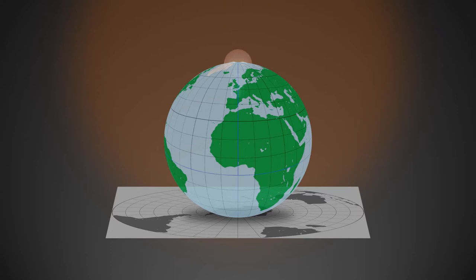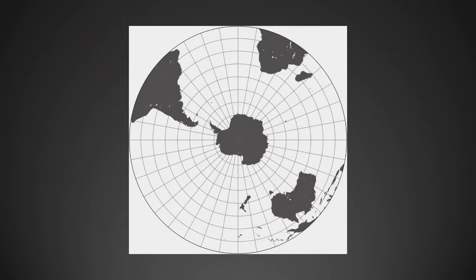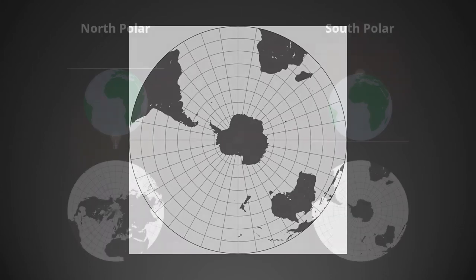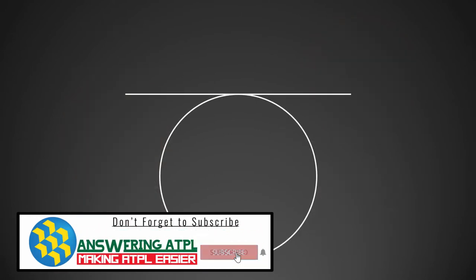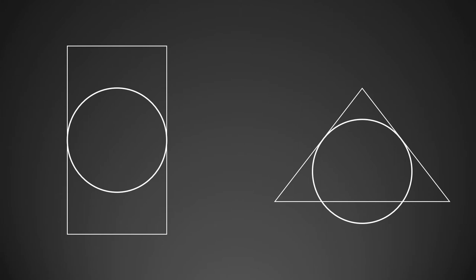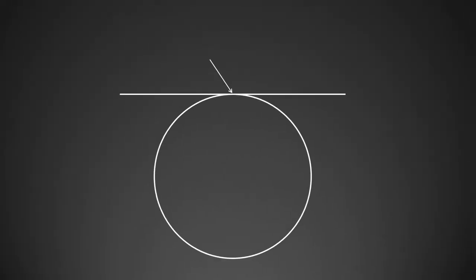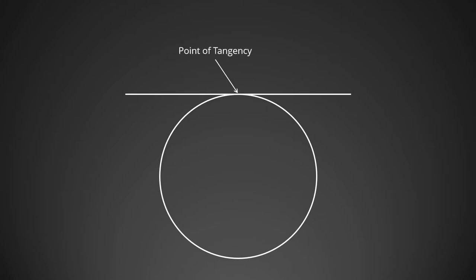The shadow is then traced to produce a chart. In our example we produce a southern hemisphere chart. To produce a northern hemisphere chart, the light source needs to be placed at the south pole and the paper touches the reduced earth at the north pole. The place where the paper touches the reduced earth is called the parallel of tangency or parallel of origin. Since on azimuthal projection the paper touches the reduced earth at a single point, this point is called the point of tangency.